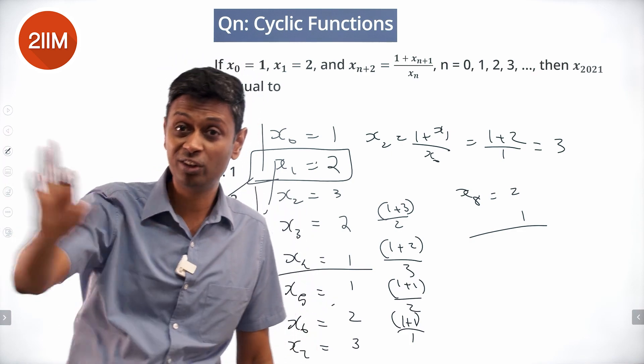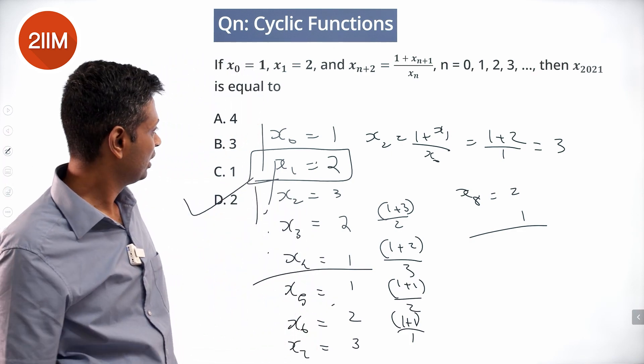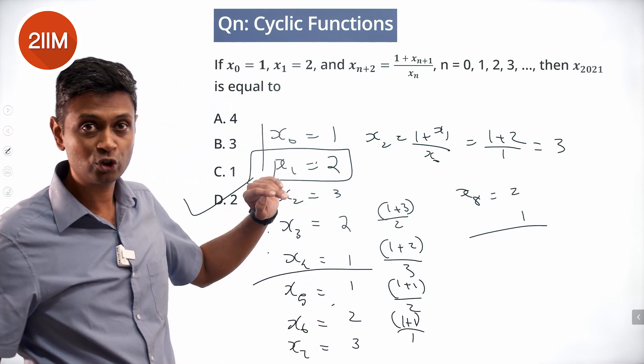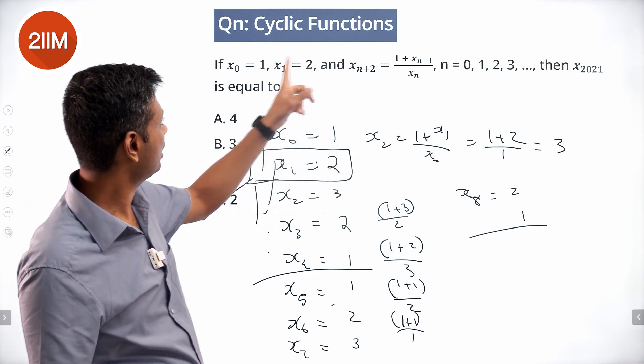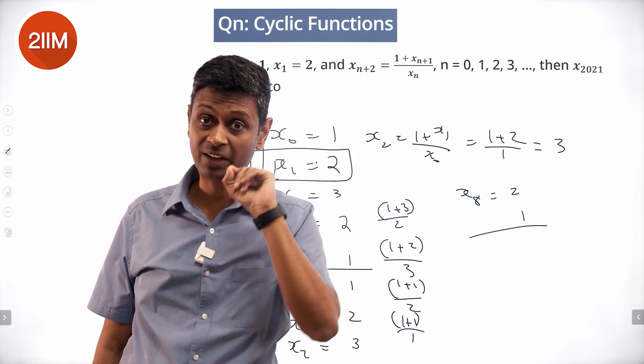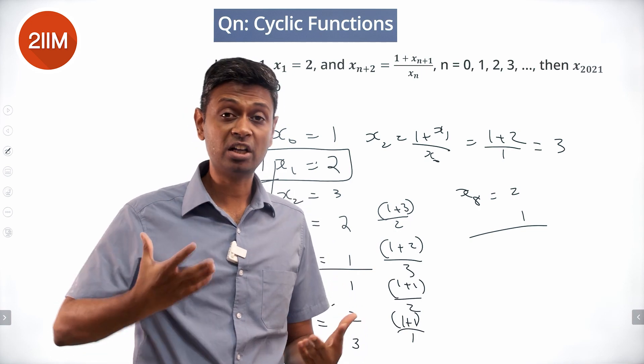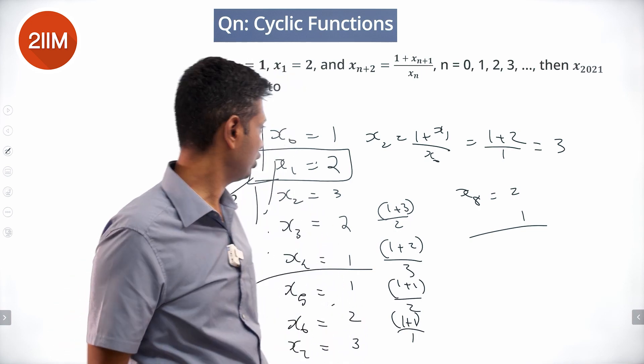The mistake I did - I already did all this, and then I said cycles of 5. I assumed we're starting with x₁, but we're starting with x₀. Something to be careful about in the last step - we are starting with x₀, and the answer is 2.